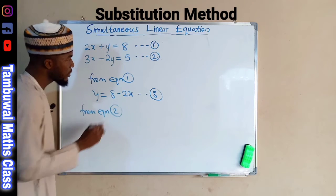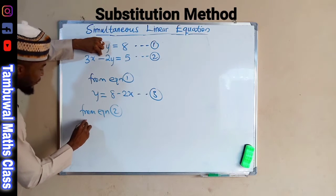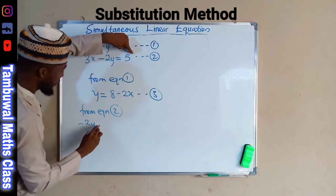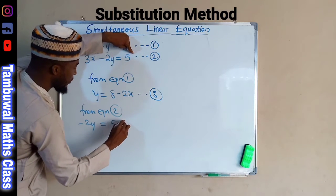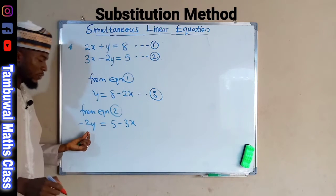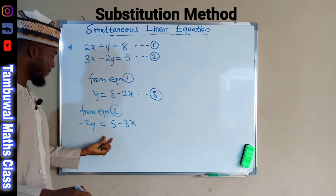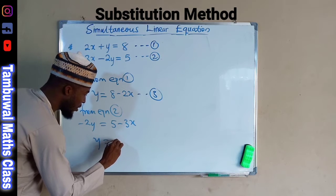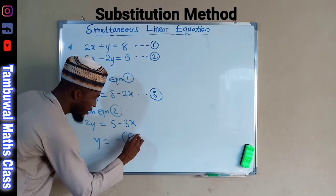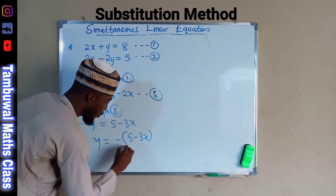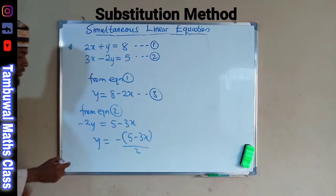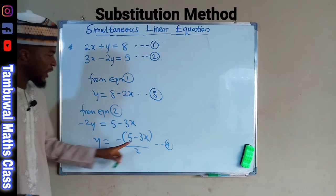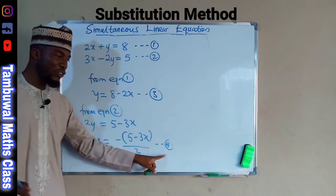From equation 2 we have negative 2y. If positive 3x crosses the equality sign it changes to negative, giving 5 minus 3x. To make y the subject we divide both sides by negative 2, so y equals negative (5 minus 3x) over 2, which simplifies to (3x minus 5) over 2. This is equation 4. We are now going to equate equation 3 and equation 4 since both equal y.